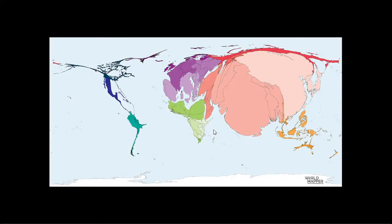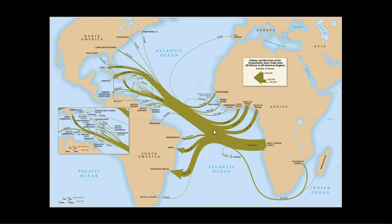A cartogram or proportional symbol map shows the world population at around 0 AD — most of the world's population was in the Eastern Hemisphere, before large migrations to the Western Hemisphere via forced or voluntary reasons. Another proportional symbol map shows flow, like the Atlantic slave trade — showing where people were taken from different parts of Africa to the Americas, with symbol size proportional to the volume of forced migration.